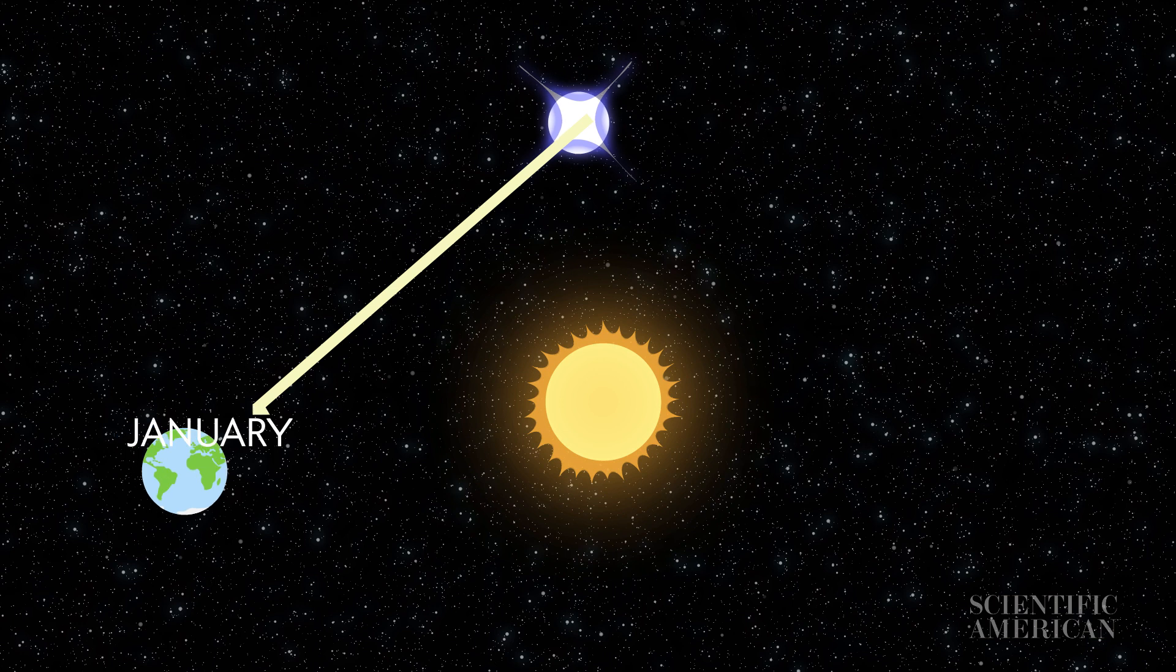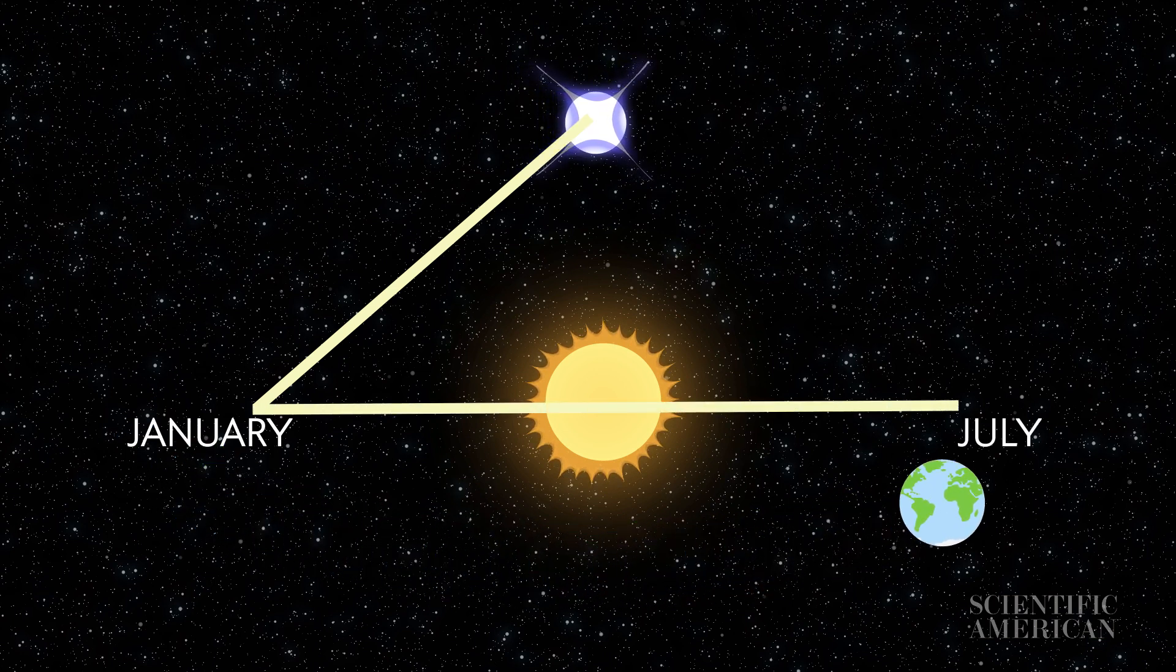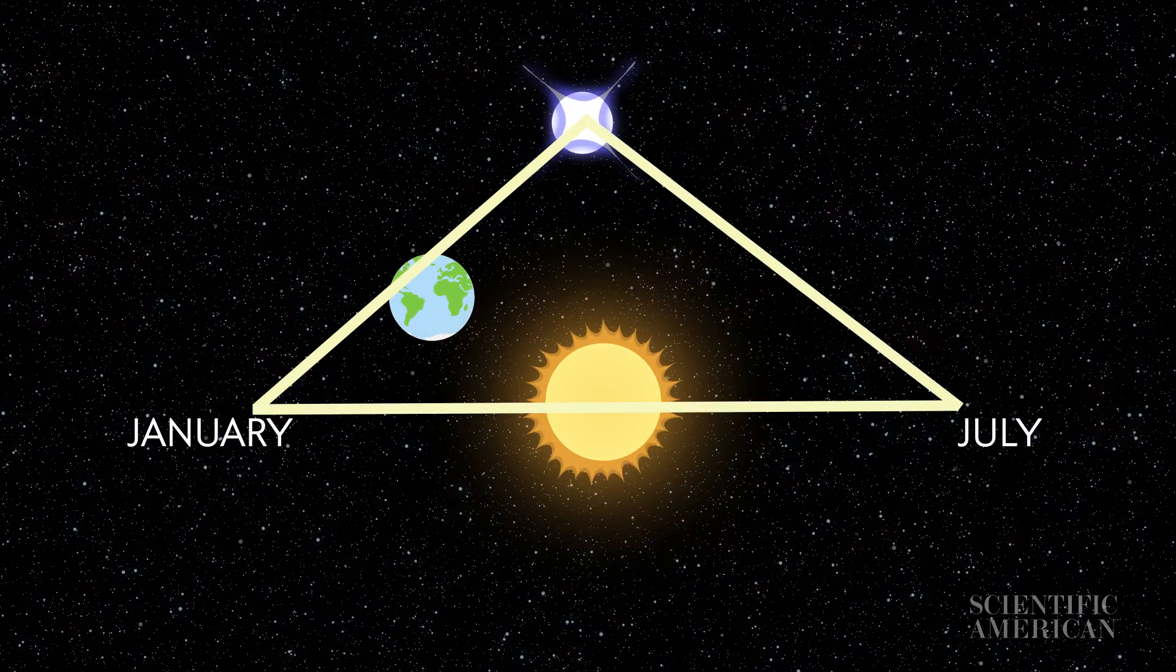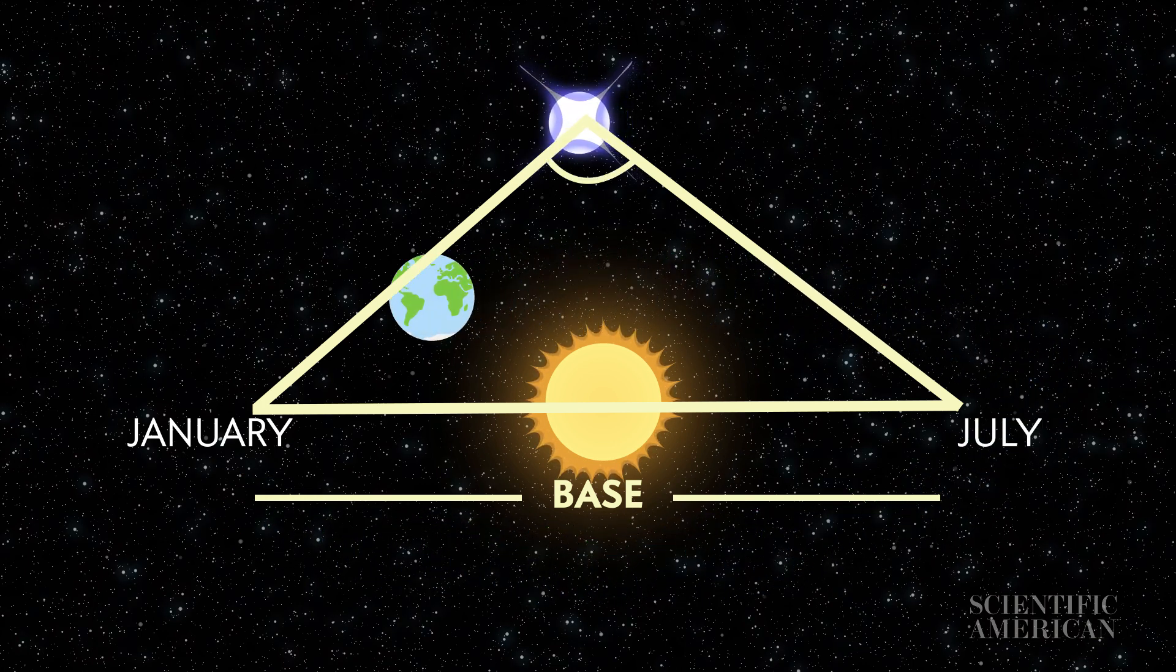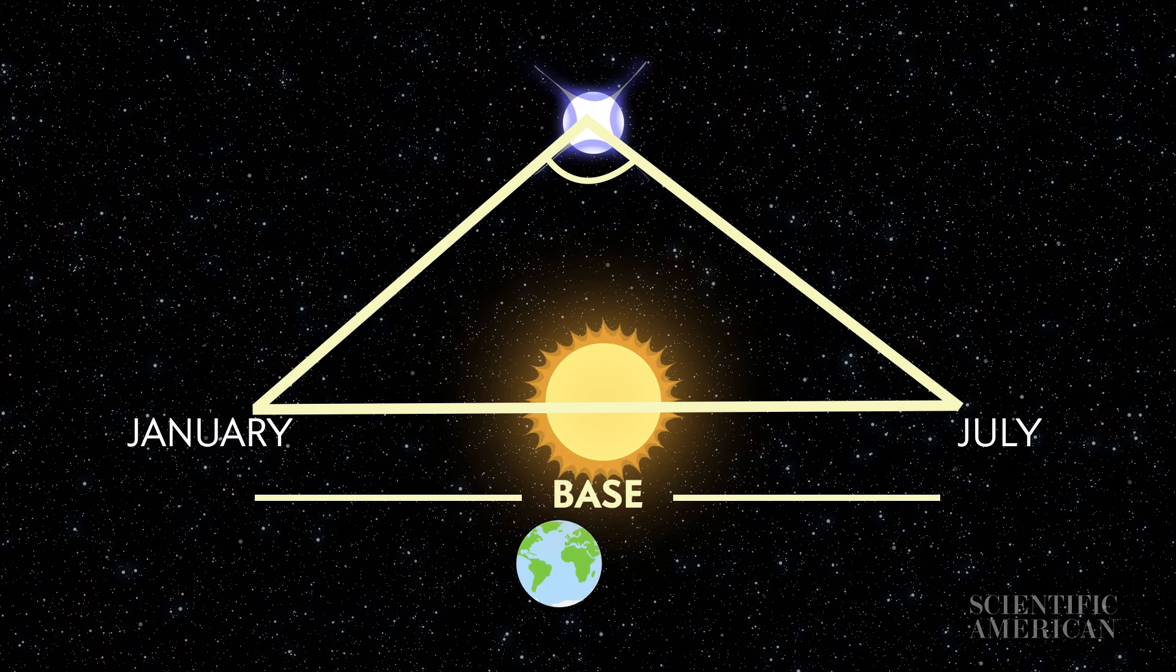By looking at a star in January, and then again in July, we can draw a triangle. The base is the diameter of Earth's orbit. The opposite angle is how far the star appears to shift.